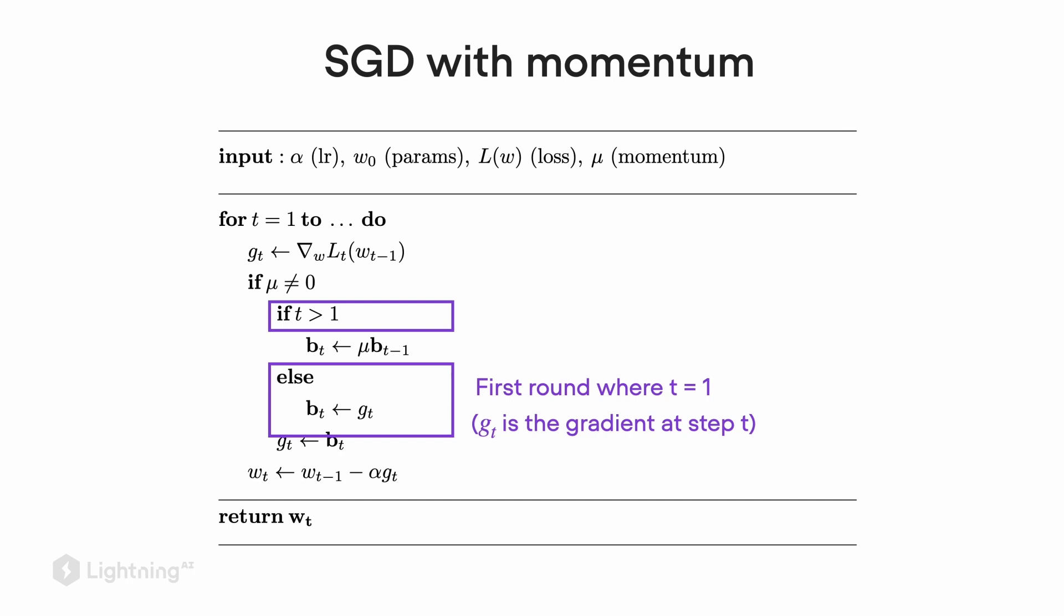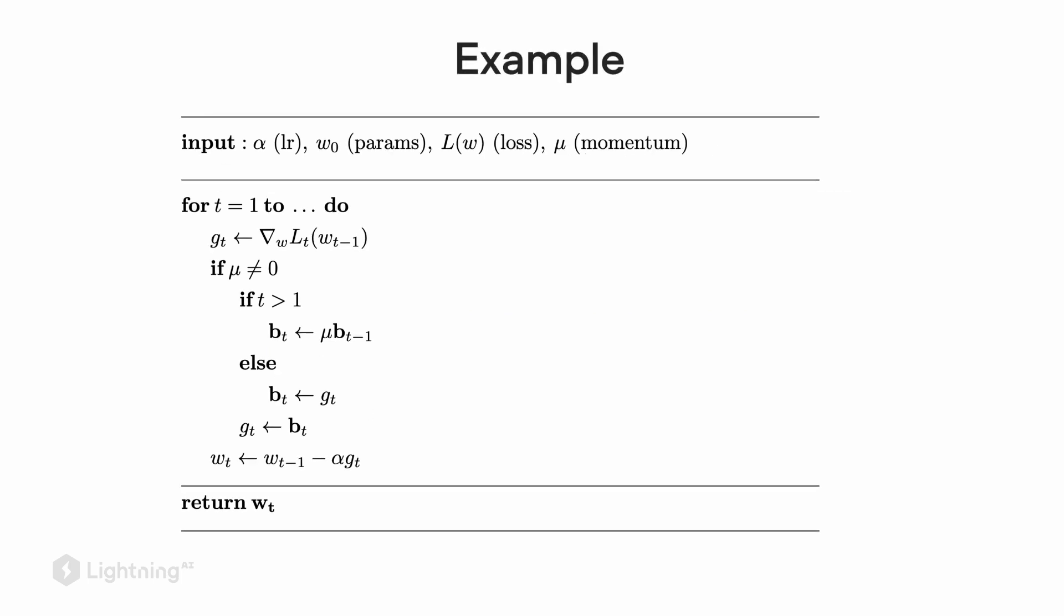Notice that there's also a variable t, and t stands for the time step. If the time step is greater than one, so after the first iteration basically, we carry out this step at the top. Otherwise, if we are in the first iteration, so if t equals one, we carry out the operations shown in the lower box. There's just an assignment happening in the first round when t equals one. In this case, this algorithm here is exactly like the regular SGD algorithm. Now for the other rounds, if t is greater than one, we do have this momentum term that we add. The computation of the momentum involves two terms: μ, our momentum coefficient, which is essentially a scalar, and b, which is something we keep reusing in each iteration. Notice here for b, we have subscript t minus one, which refers to the previous iteration.